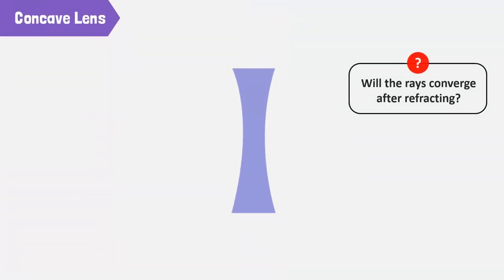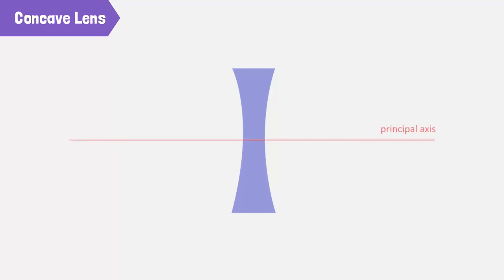Will the rays converge after refracting from a concave lens? If the rays from a point object are incident on a concave lens, then after refraction, they do not converge at a single point.